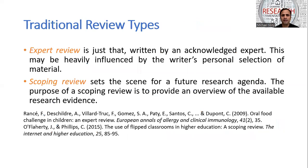The different types of traditional literature review include expert review, which is usually written by experts in a particular body of knowledge. For instance, the study on oral food challenge in children — an expert review published in the European Annals of Allergy and Clinical Immunology — where experts reviewed the oral food challenges prevalent in children.